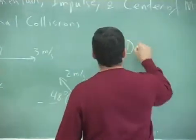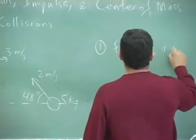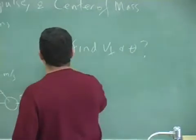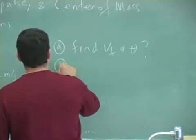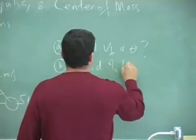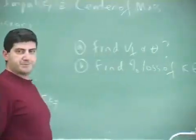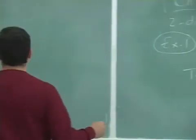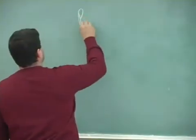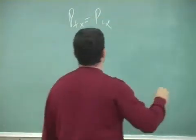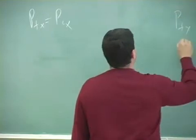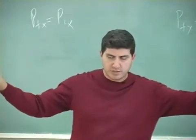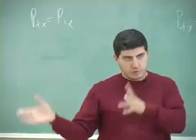In our specific problem: a 2 kilogram object going at 3 meters per second and a 5 kilogram object moving at 2 meters per second at 48 degrees. Find A) the final velocity V_final and its angle — which direction the system will move — and B) the percent loss of kinetic energy. We'll set momentum conserved, separating it into X and Y components because momentum is a vector.